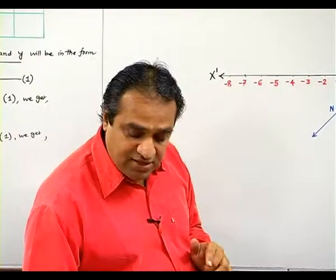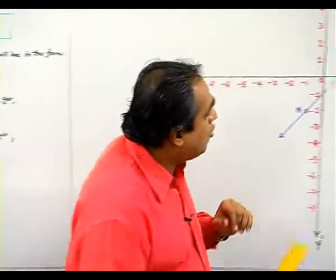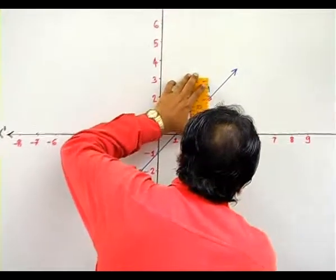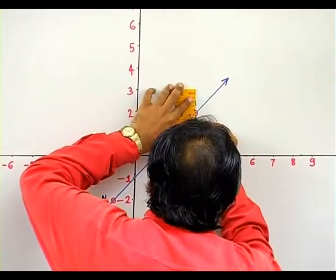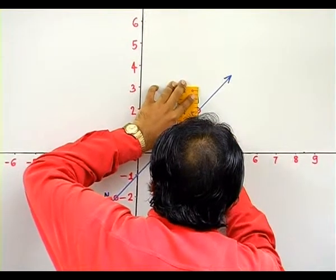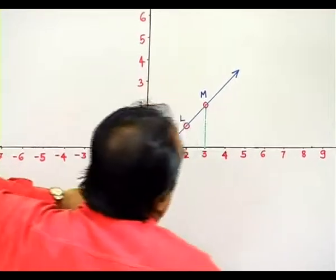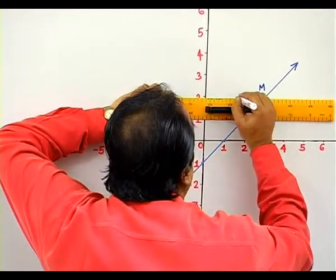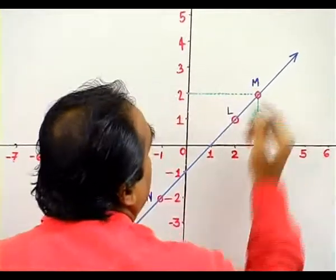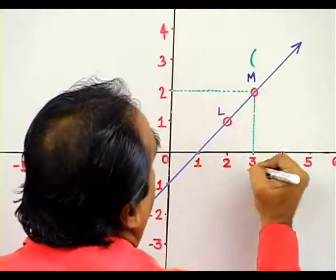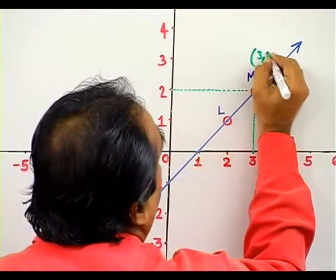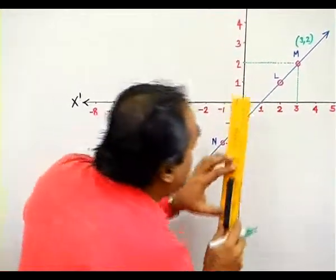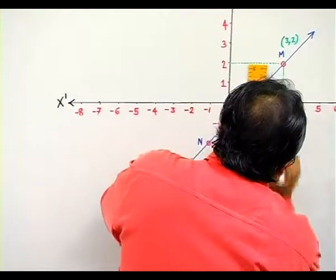So to find the coordinates of the point, we shall drop perpendiculars from these three points on the x-axis. We have dropped a perpendicular. Similarly, we shall drop a perpendicular on the y-axis, and you know that the coordinates of M are 3 comma 2.